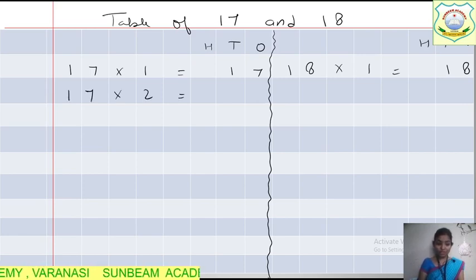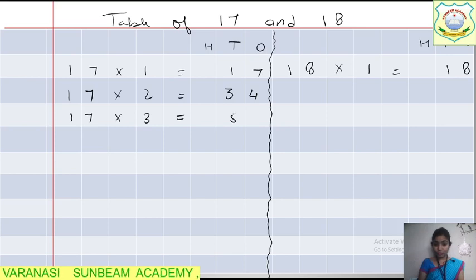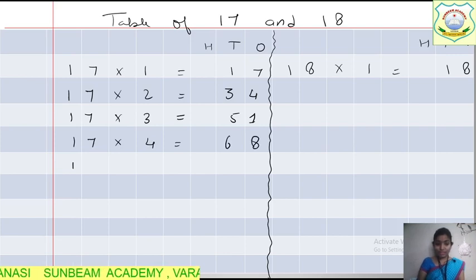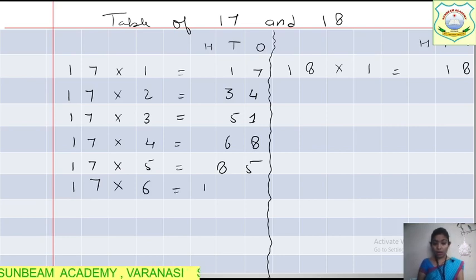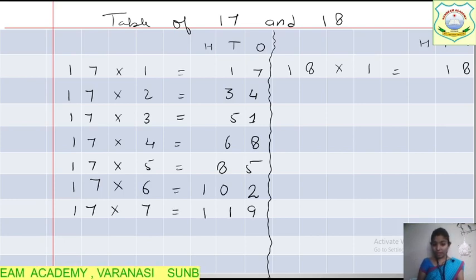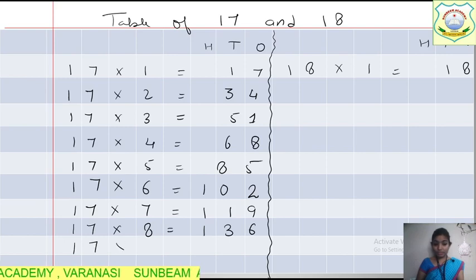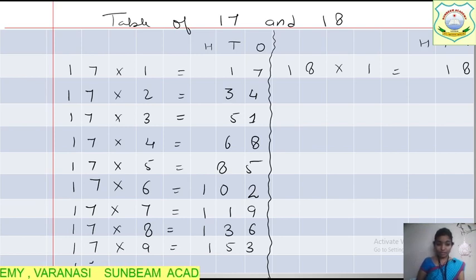Now start: 17 ones are 17. 17 twos are 34. 17 threes are 51. 17 fours are 68. 17 fives are 85. Write down students, fast. 17 sixes are 102. 17 sevens are 119. 17 eights are 136. Learn it. 17 nines are 153. And 17 tens are 170.